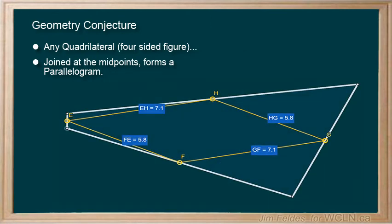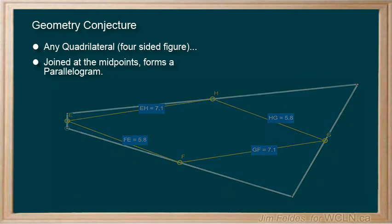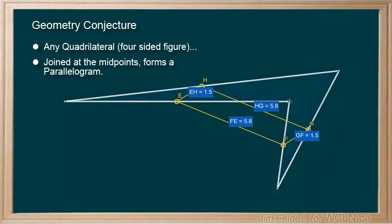Here are a few examples with the opposite sides showing the same measurements. Surprisingly, the conjecture seems to hold, regardless of the shape of the quadrilateral. You can test things like this on your own with online geometry programs.